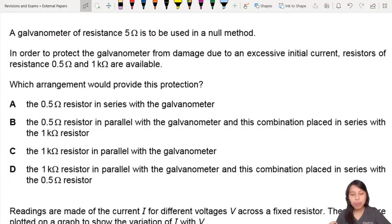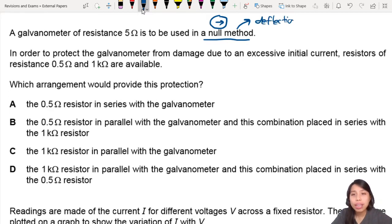We need a galvanometer to be used in the null method. But what is a null method? Null method basically means if you look at the galvanometer, there will be an arrow on it, and you're just looking whether there's deflection or not. If there's current flowing through the galvanometer, there's deflection. If not, there is no deflection. So that's what we mean by the null method.